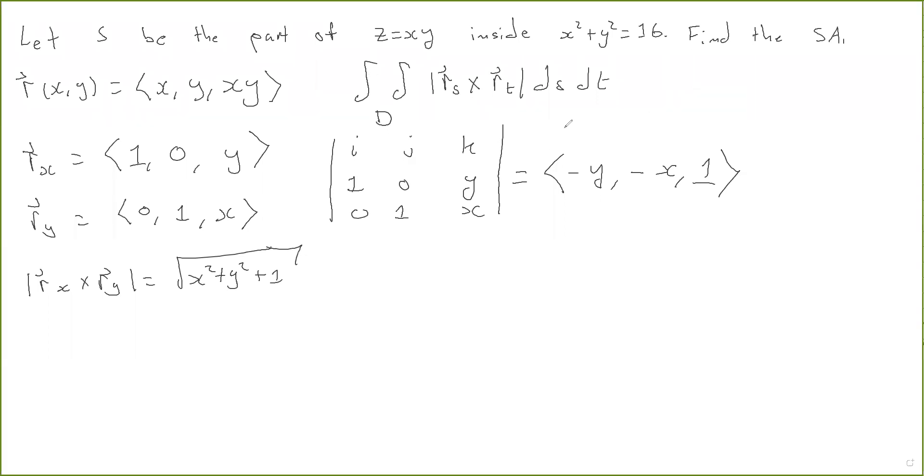Okay, now we can plug this into this formula. Okay, so the surface area is equal to the integral over the parameter domain D of the magnitude of the cross product, so that's the square root of X squared plus Y squared plus 1, dy dx.